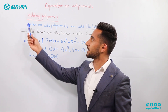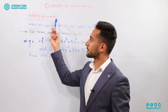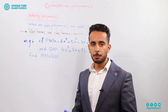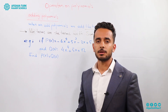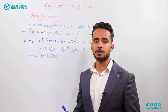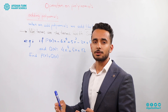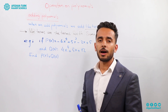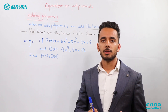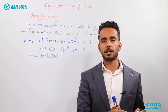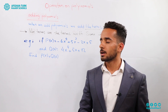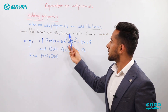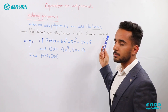The first operation is addition of polynomials. In order to add two polynomials, we are going to add the like terms. In order to add two or more polynomials, we have to sum the like terms. So what are like terms? Like terms are the terms with the same degrees.